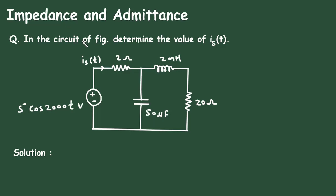If you want to see more topics on electrical and electronics engineering, check the playlist section of this channel. In this video, we will see an example on impedance and admittance. The question is: in the circuit shown in the figure, determine the value of Is(t).